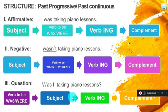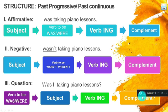With the affirmative structure, we must use the verb 'to be' in the past tense — was or were — and the verb with -ing. We use -ing because we are expressing ongoing actions: playing, singing, eating. The -ing ending in English corresponds to the Spanish -ando/-endo ending.